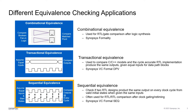Transactional equivalence checking is used to compare two designs by verifying a defined transaction, usually between the cycle-accurate RTL implementation and its untimed C and C++ models. VC Formal DPV is built on this methodology.